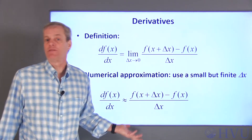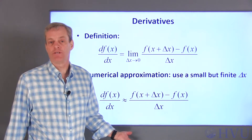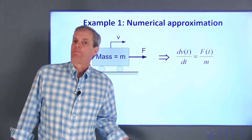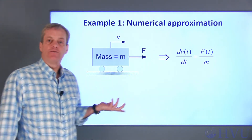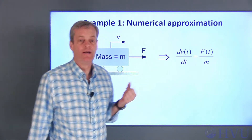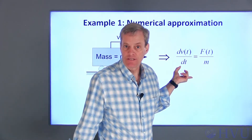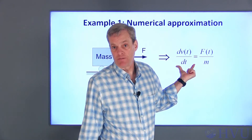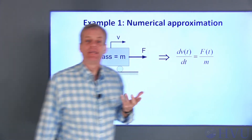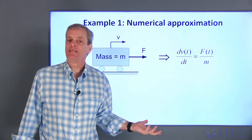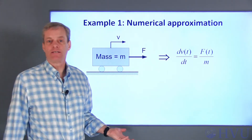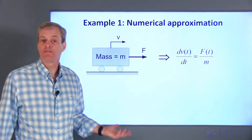I'll illustrate how this is done with the examples from the previous video on writing differential equations. The first example is a problem solved in Chapter 16 when I introduced integrals: a mass on frictionless rollers subjected to a force. The differential equation describes the system, where the derivative is the mass's velocity with respect to time. Our goal is to solve for velocity as a function of time. We need an initial velocity as our initial condition.